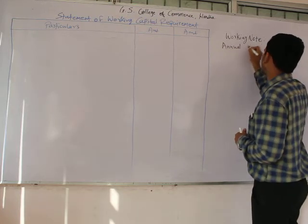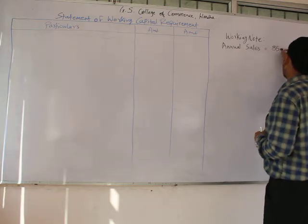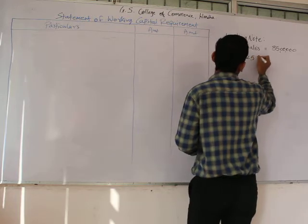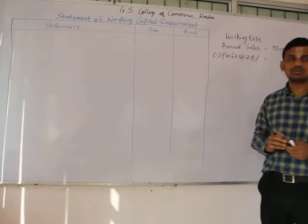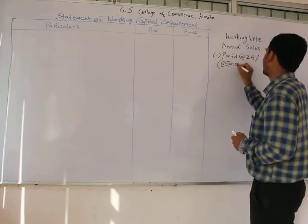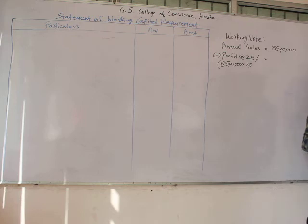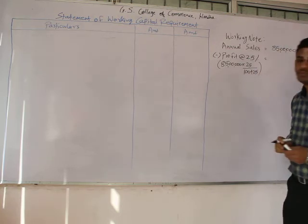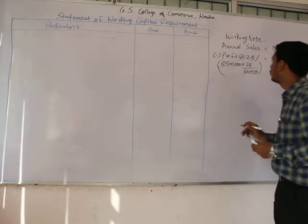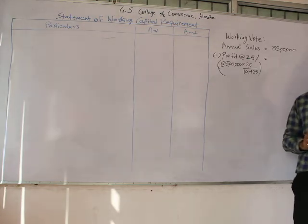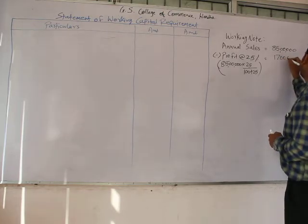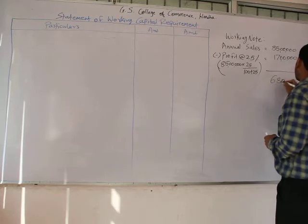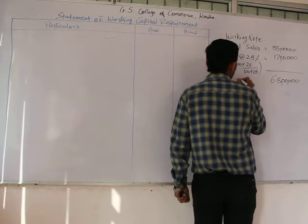Our annual sales given in the question is 85 lakhs. We will apply the formula: 85 lakhs × 25 ÷ (100 + 25), which is 85 lakhs × 25 ÷ 125. We get our answer as 17 lakhs, which is the profit portion. By deducting 17 lakhs from 85 lakhs, we receive the amount of 68 lakhs, which is the cost of sales to be used for various calculations in the working capital statement.